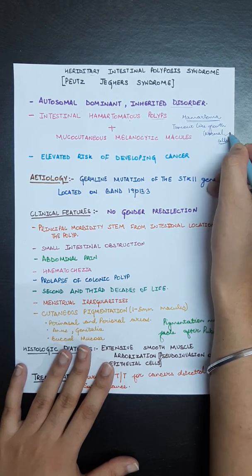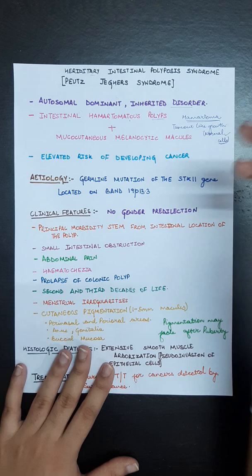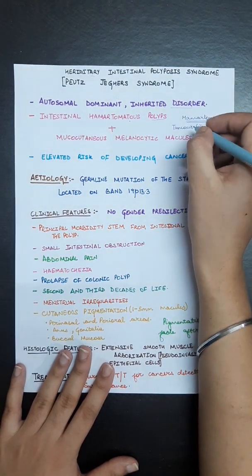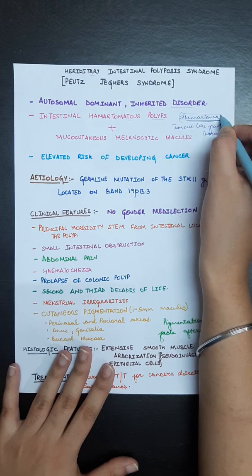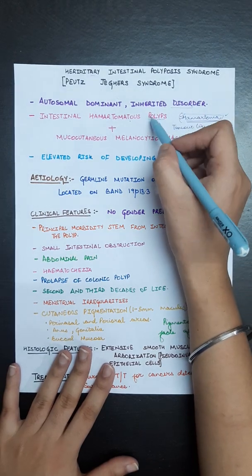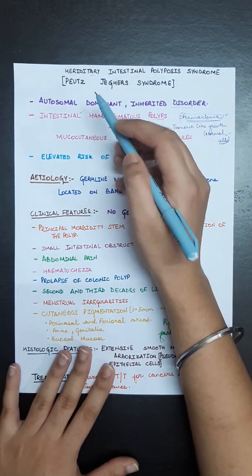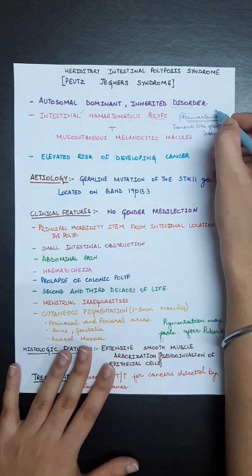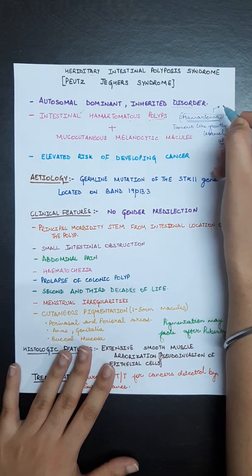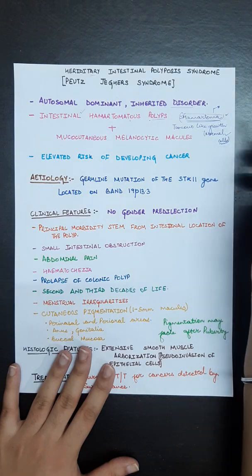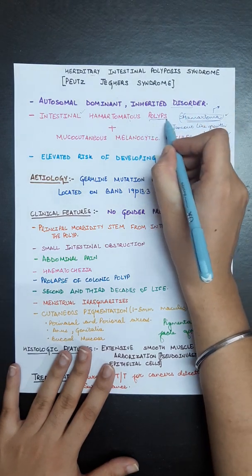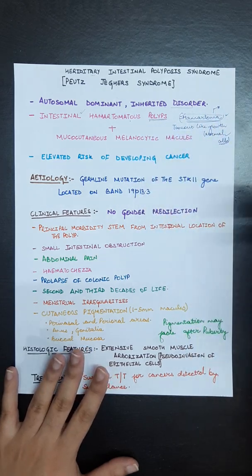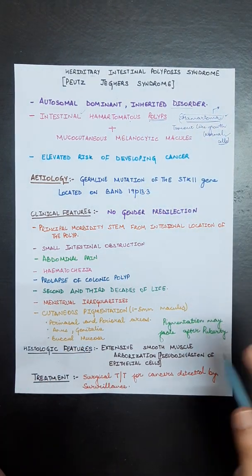These cells originate from the particular tissue. These hamartomas in the polyp originate from the intestine, from the tissue where it is present. It is a tumor-like growth. A polyp is an abnormal growth of cells present in the intestine in this syndrome.